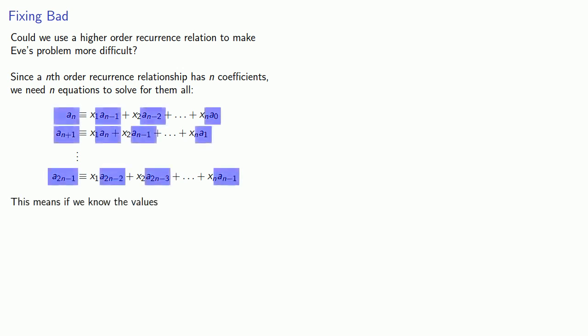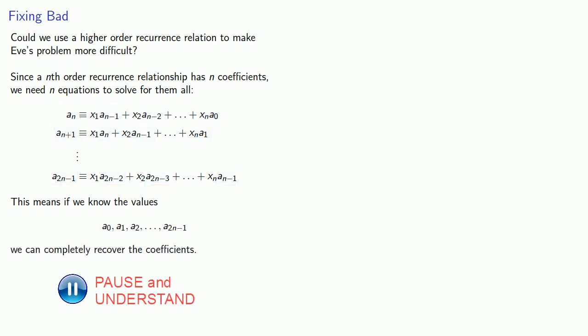And if we have this system of equations, we can solve for the coefficients exactly. And so that means if we know the values a0 through a2n-1, we can completely recover the coefficients. And that's a fairly modest set of values. This means we can't simply use a higher order recurrence relation. Even if our recurrence relation relies on the preceding 1000 terms, Eve only needs to know 2000 bits of the sequence. So what can we do? Well, let's take a look at that next.